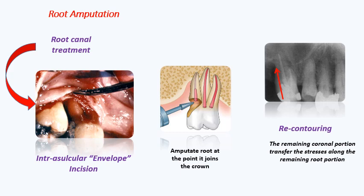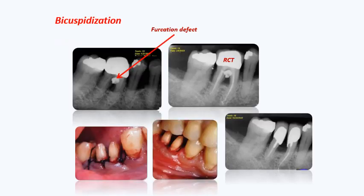This is bicuspidization. When there is a furcation defect where proper oral hygiene cannot be maintained and there is repetitive inflammation, the tooth is cut from the crown down to the furcation into two separate halves. Both halves are kept in the mouth and function as two premolars.